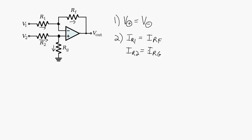The first thing I'm going to do is look at the output when it's just V1. So I'm going to short V2, meaning this voltage at V2 is grounded. What is the output when only V1 is being considered? If we short V2, that's going to make the non-inverting terminal ground, and we end up with just an inverting amplifier. So IR1 is equal to IRF.